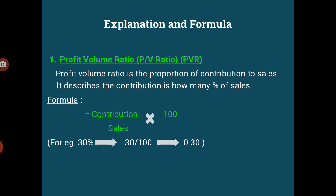Profit Volume Ratio is the proportion of contribution to sales. It describes what percentage your contribution is of your sales. In the name 'profit volume ratio,' what we are actually considering is contribution — because fixed costs in business are inevitable; at any level of production you have to bear them. The formula is: Contribution divided by Sales, multiplied by 100. The answer can be expressed as a percentage, for example 30%, or as a decimal, 0.30.